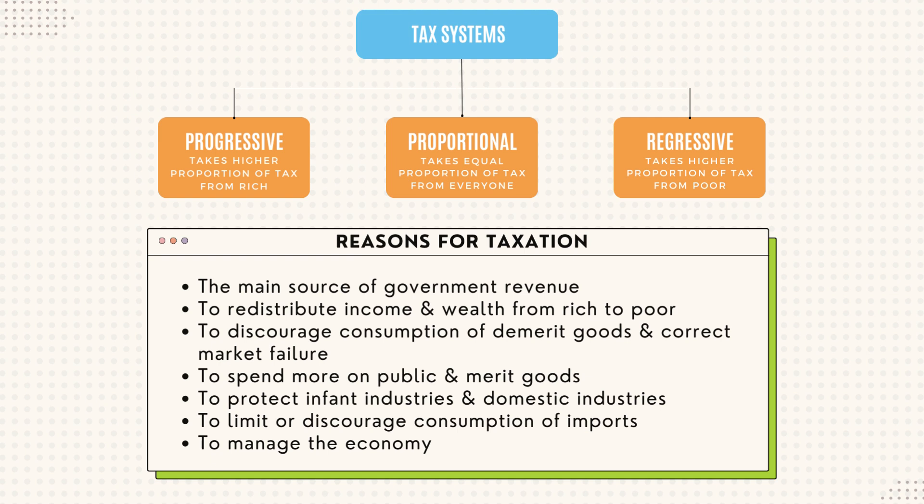What are the reasons for taxation? Taxation is the main source of government revenue. Taxation helps to redistribute income and wealth from the rich to the poor. It helps to discourage consumption of demerit goods and correct market failure. Taxation is also imposed to spend more on public and merit goods, to protect domestic industries, to limit or discourage consumption of imports, and to manage the economy.